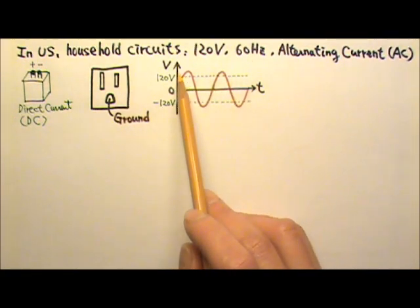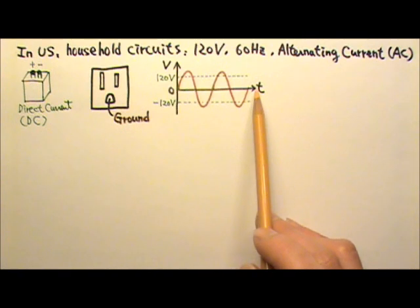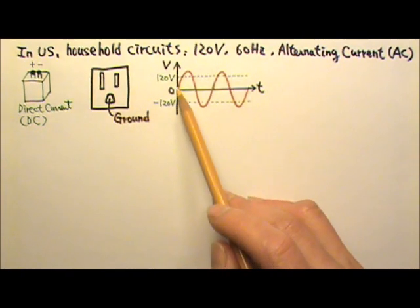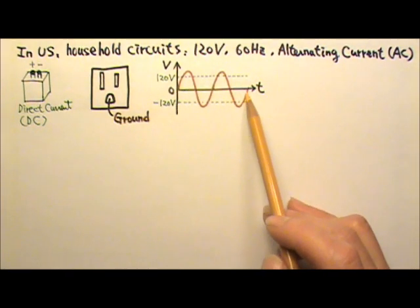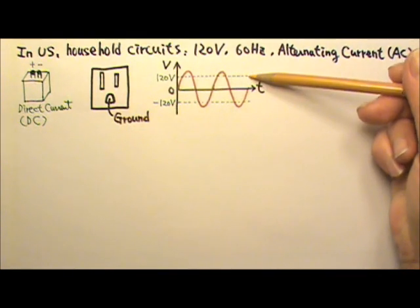If I plot the voltage versus time graph for our household circuit, it would look like a sine function. The 120V would be the average, the root mean square voltage.